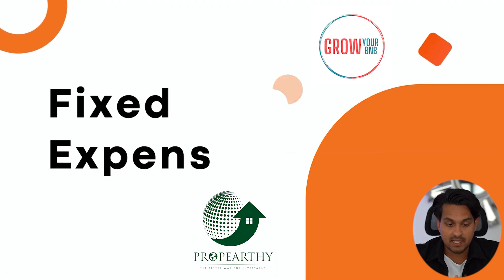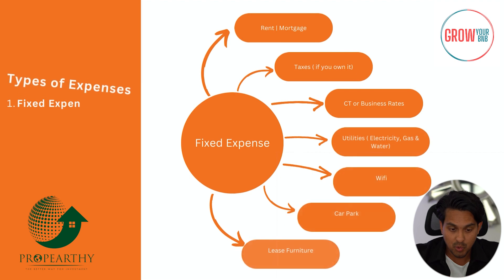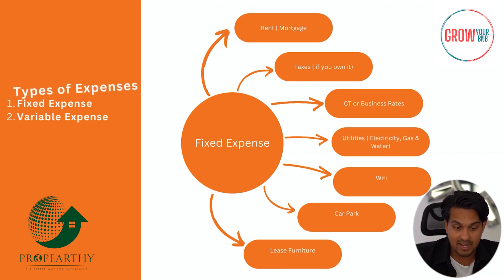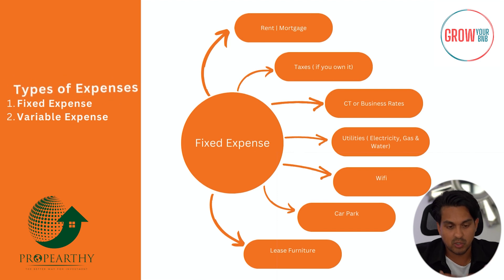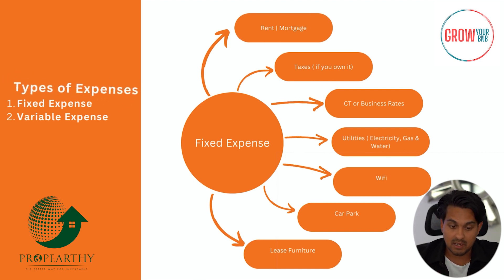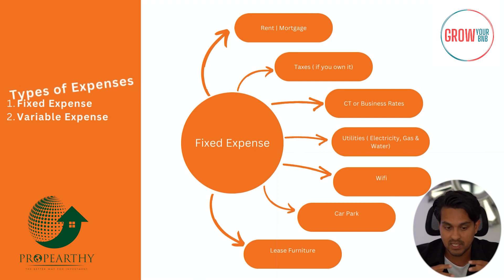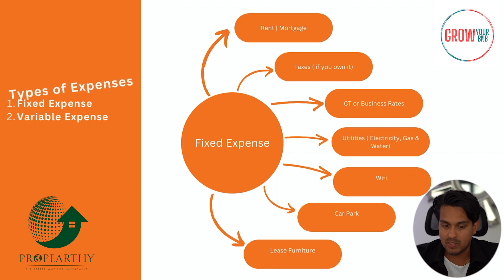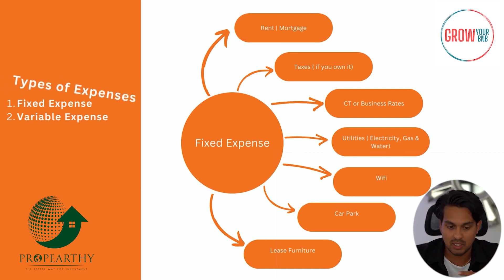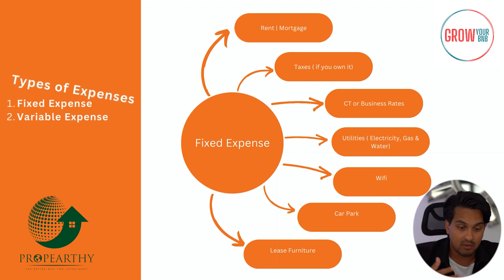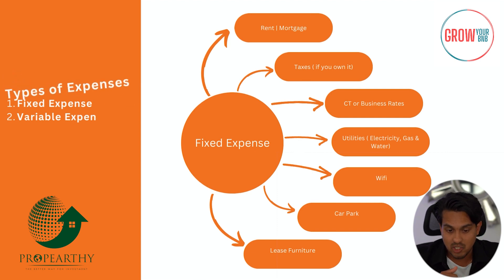The fixed expenses: if you own the property, you've got a mortgage. If you're doing rental arbitrage or rent-to-rent in the UK, you've got a fixed rent with the landlord — that's your first big expense. If you own the property, you need to check with your solicitors and accountants, but there are taxes to cover. For rental arbitrage clients running as a business, you'll be liable to pay taxes. There's also council tax in the UK, or business rates, paid on a monthly basis.